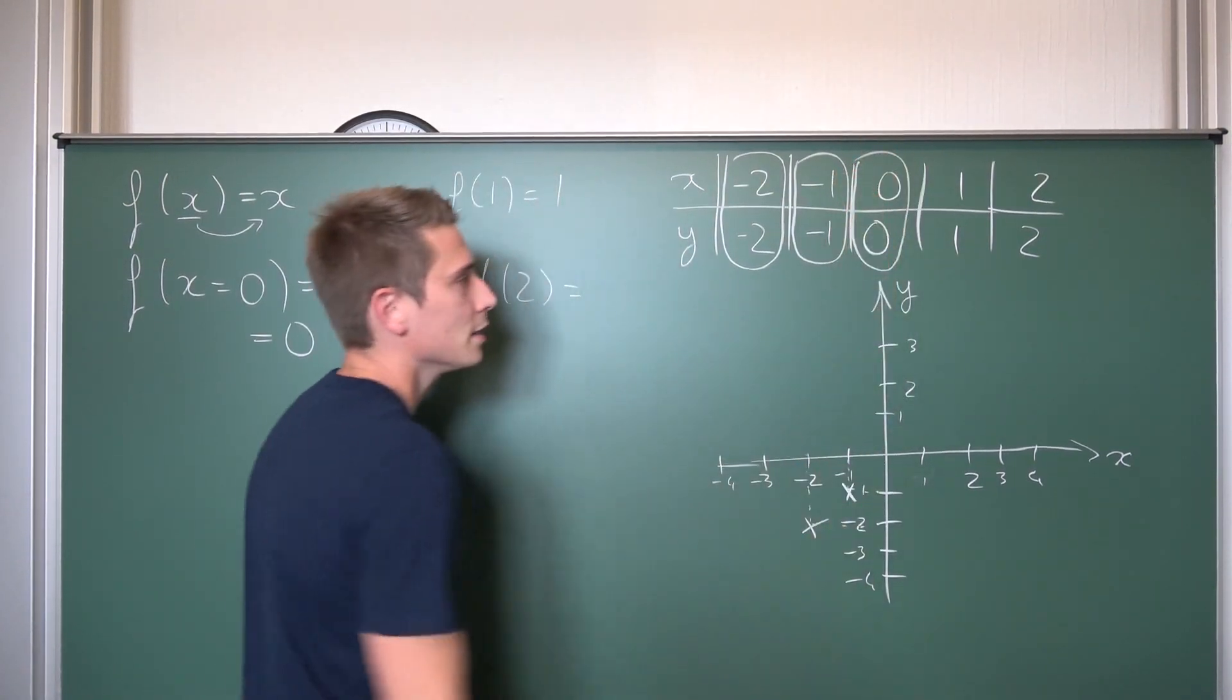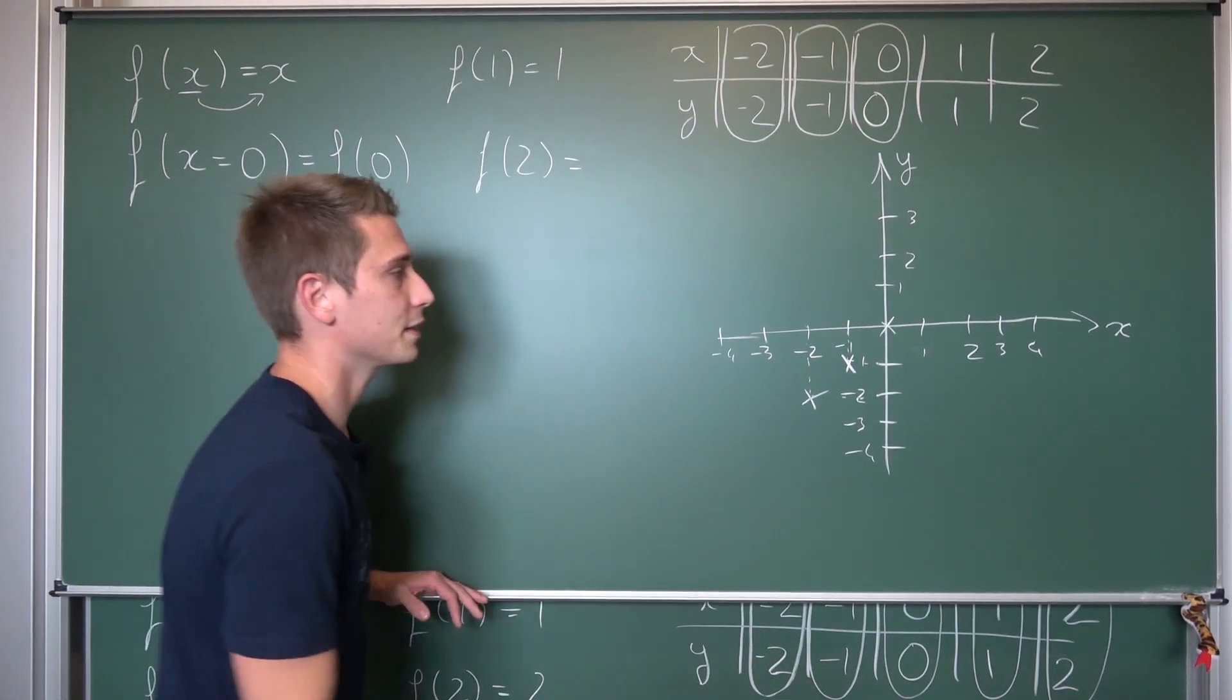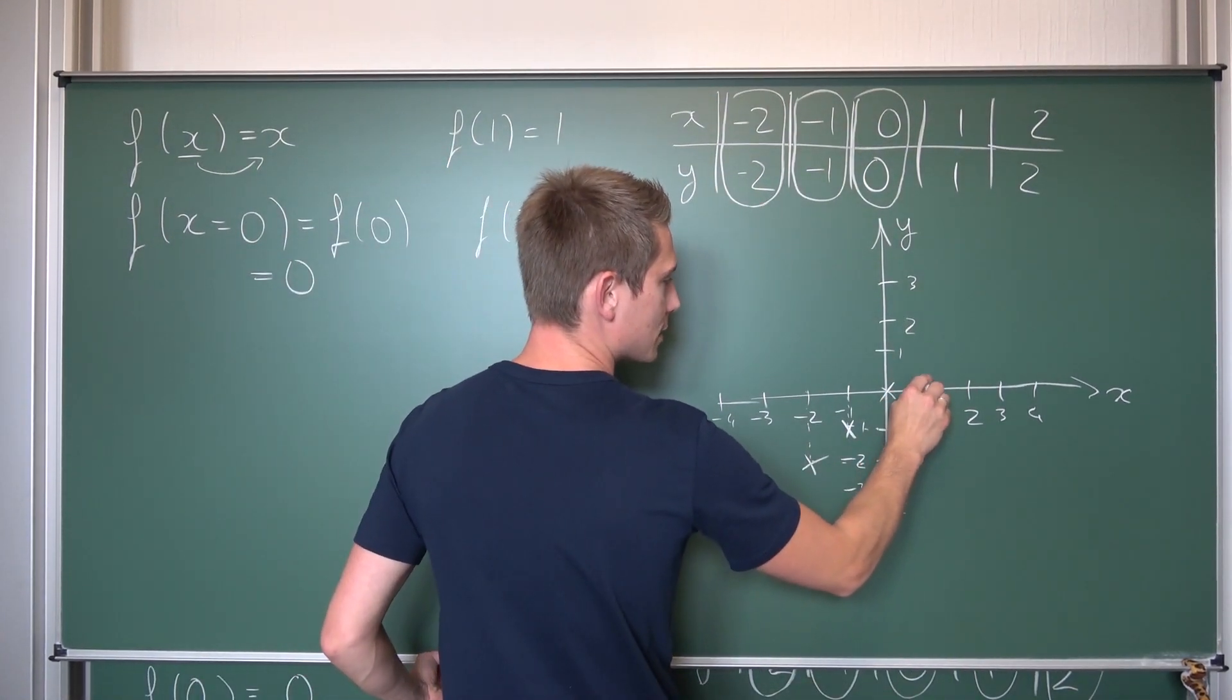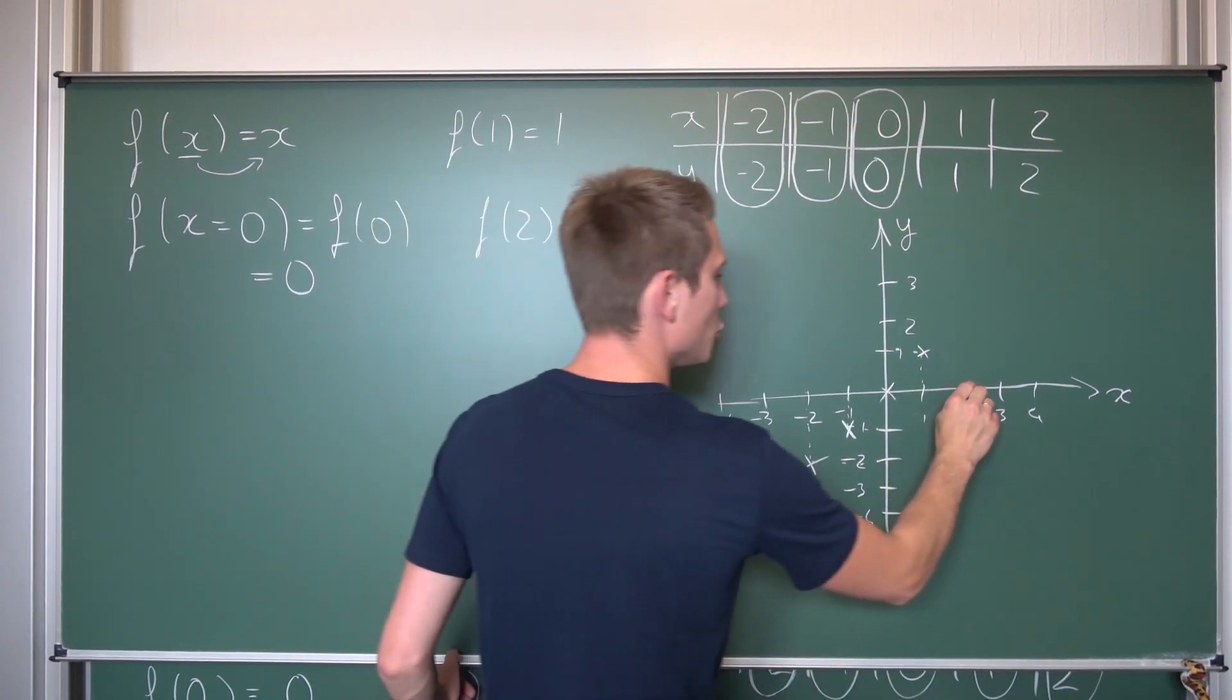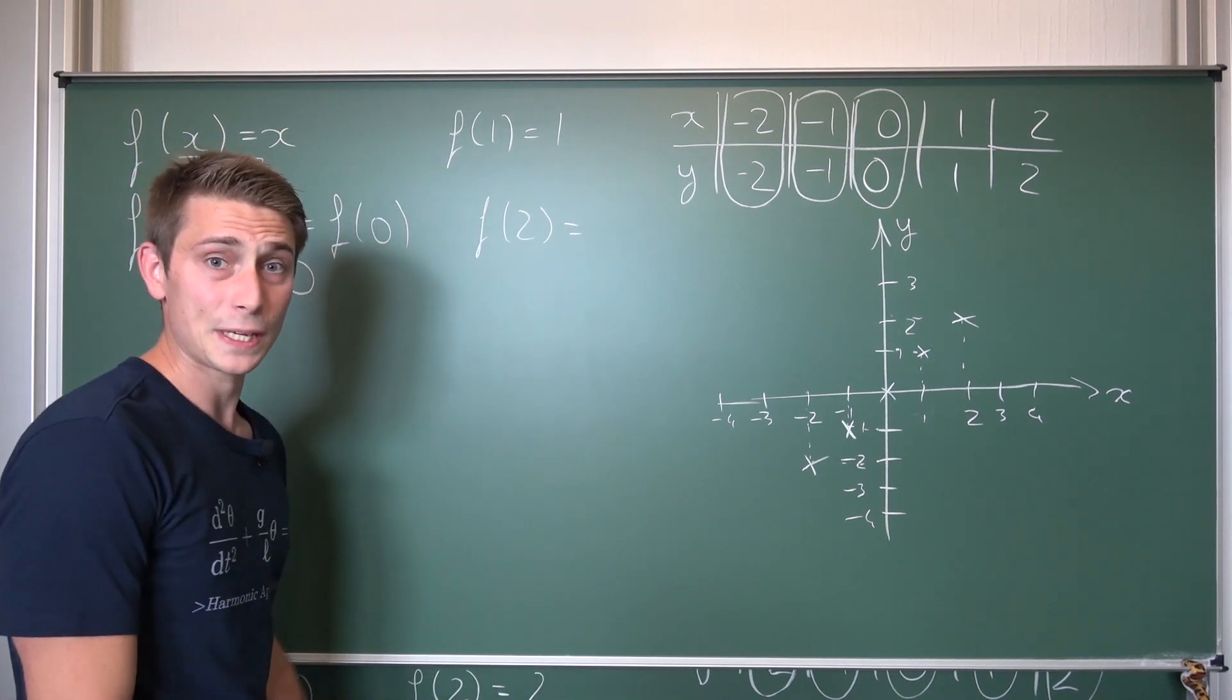You can already see a certain pattern here. 0, 0. That's in the origin of the coordinate system. And then we are going to get 1, 1. This is here and here. It's exactly here. And then 2, 2 up here. And that's a done deal, I would say. We got this.